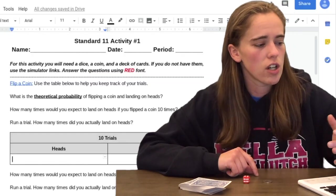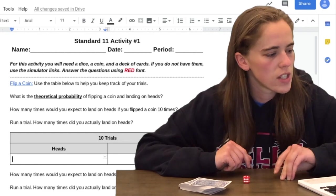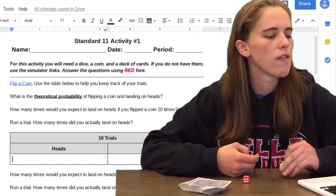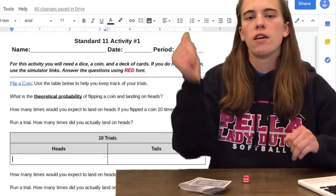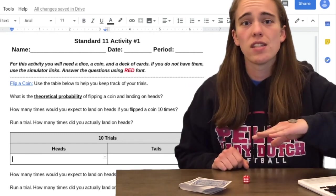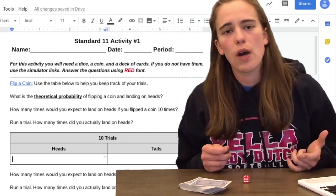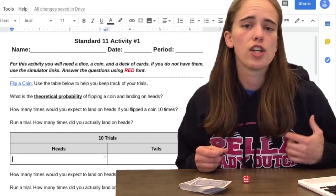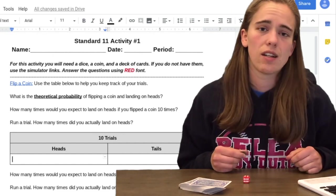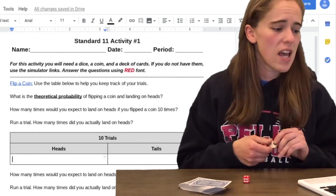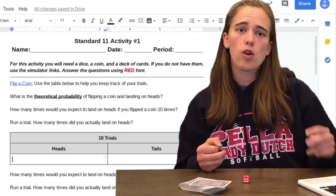So for each one, you're going to start off and it's going to ask you what's the theoretical probability. The first one says what is the theoretical probability of flipping a coin and landing on heads? So if I take my coin and flip it, what do you think the probability is that it lands on heads? Once you figure out the theoretical probability, you're going to use that to say how many times would you expect it to land on heads if you flipped it 10 times? Those are your theoretical probabilities.